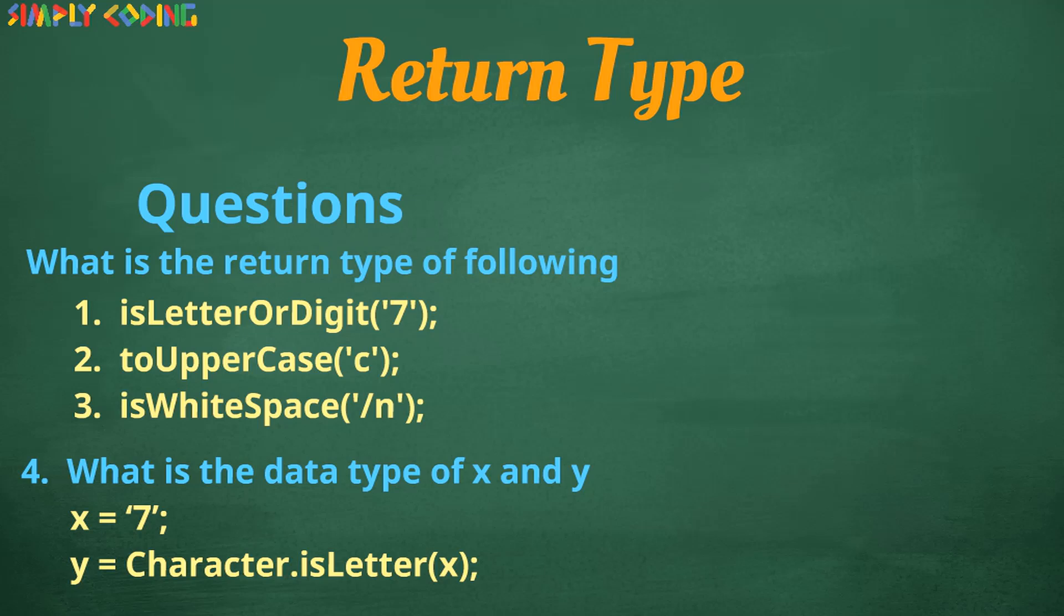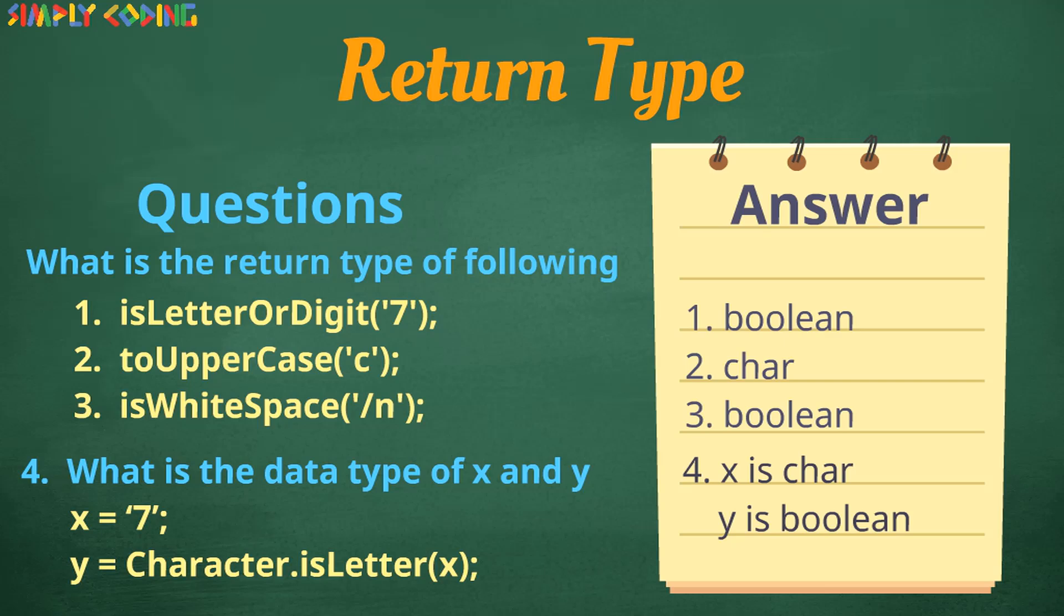A quick summary will show all of the methods have parameters as char. All methods starting with is return boolean. All convert case methods return char. Only toString returns string. Now if you see the questions again you would be able to answer them correctly if you remember the previous table.